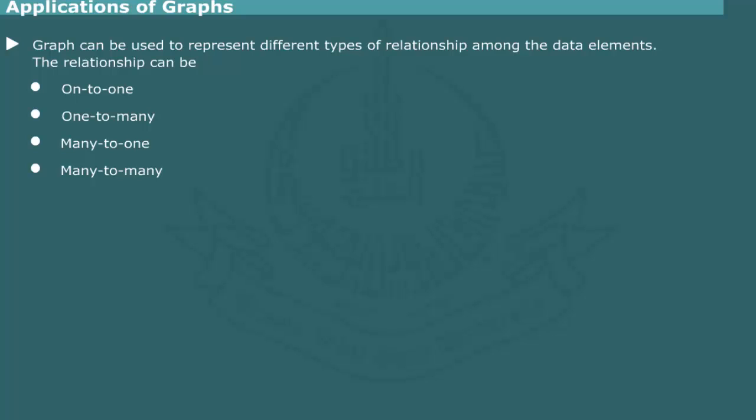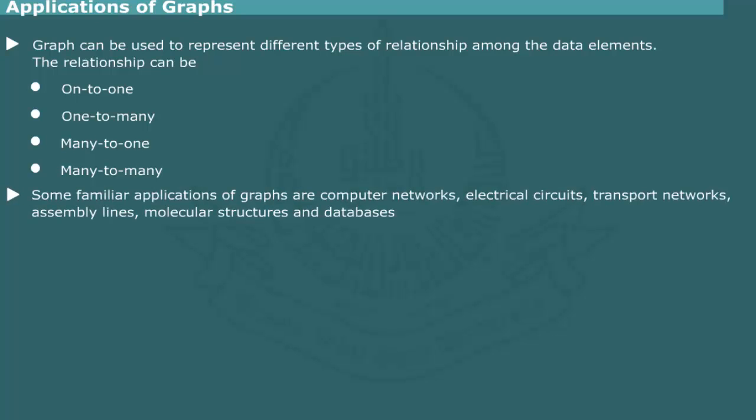In real life, we come across many such examples. Some familiar examples are computer networks, electrical circuits, transport networks, assembly lines, molecular structures, and databases.